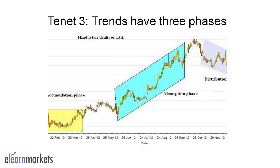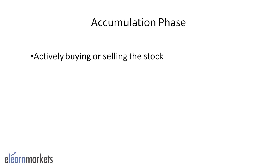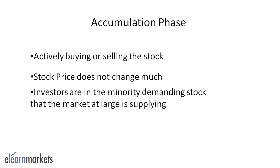Tenet 3: Trends have three phases. The Dow Theory asserts that the major market trends are composed of three phases: an accumulation phase, a public participation phase, and a distribution phase. The accumulation phase is a period when the investors who know about the stock movement are actively buying or selling the stock against the general opinion of the market. During this phase, the stock price doesn't change much because investors are in the majority demanding stock that the market at large is supplying.